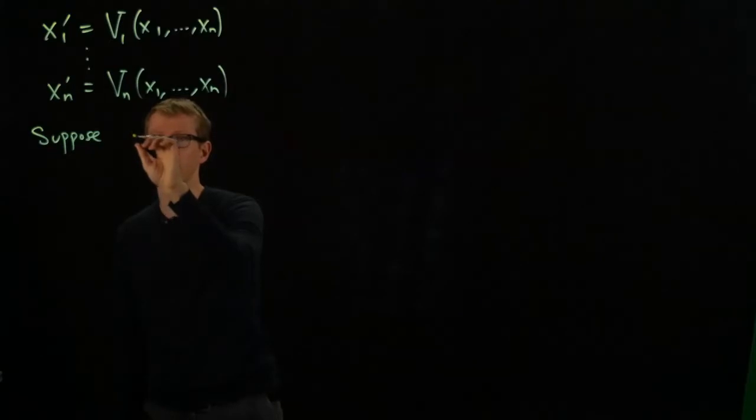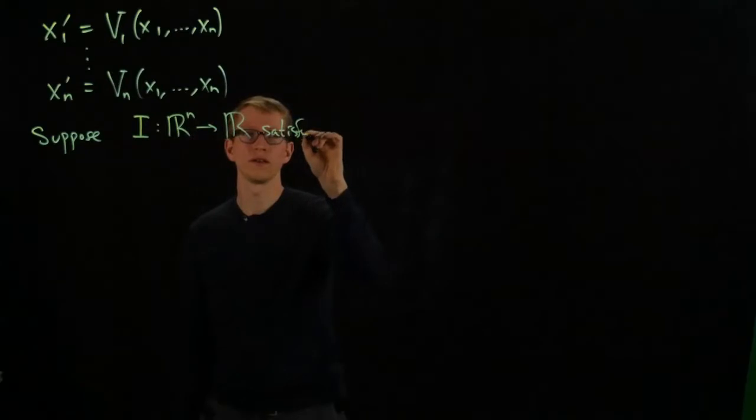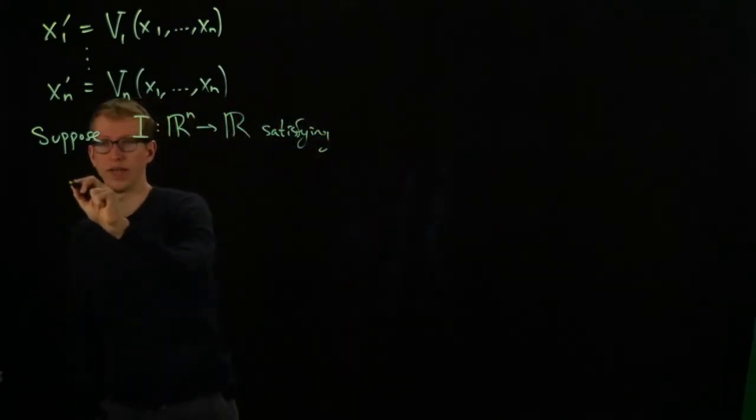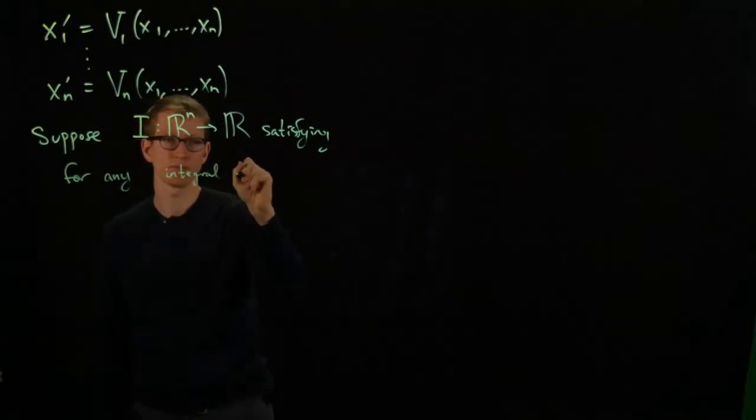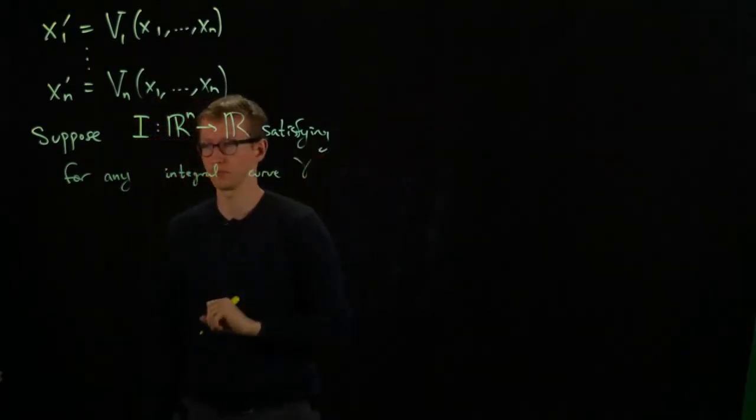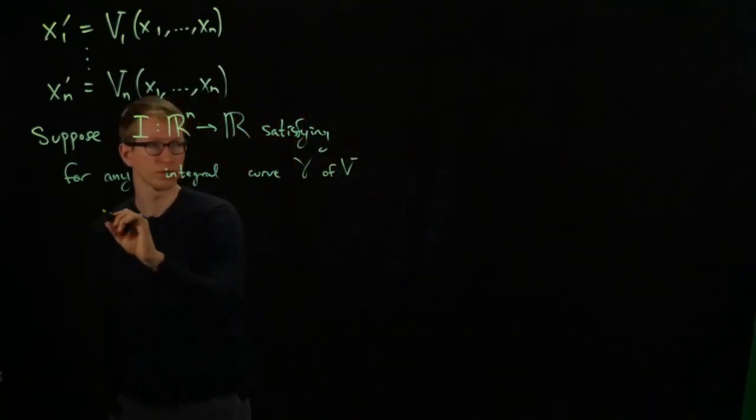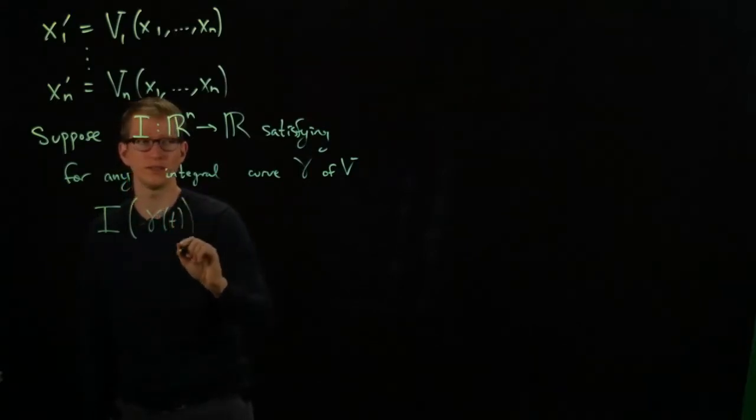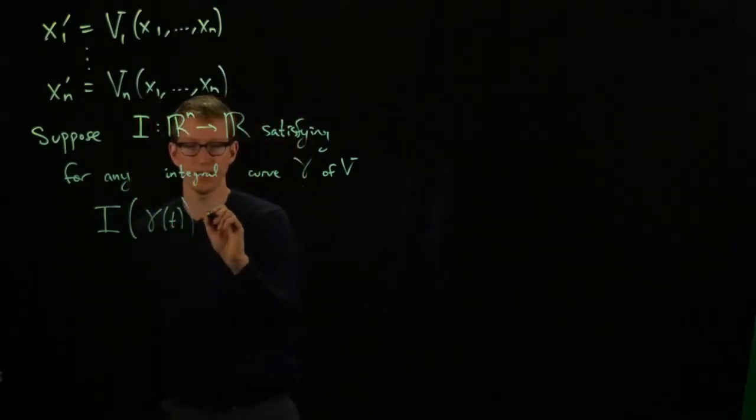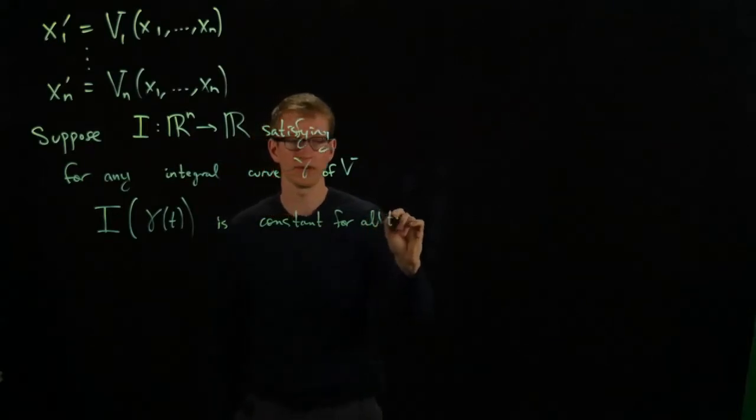Suppose that there exists a function, let's call it i, that is a function satisfying the condition that for any integral curve gamma of v, if I evaluate the function i on gamma for all t in the domain of this curve, then this is constant for all t in the domain of gamma.